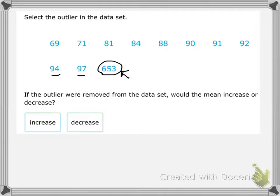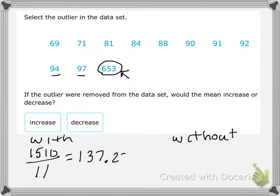we're going to calculate the mean with the outlier and without. So let's add up here the sum including 653 so that we can find the mean. And the sum is 1510. We're going to divide by the number of numbers. And there are 11 numbers. So our mean is 137.27 repeating.